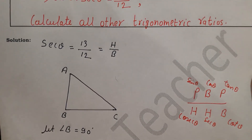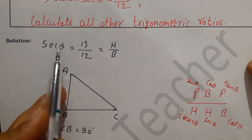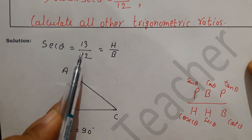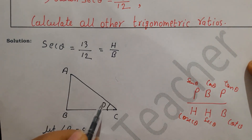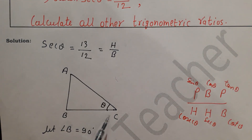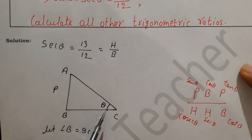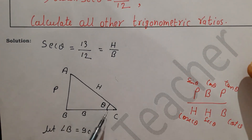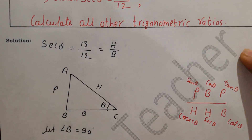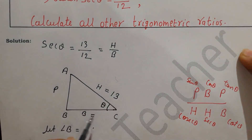Now see here: the triangle is complete with hypotenuse 13. For angle C, we have theta given. Whatever the acute angle — whether A, B, or C — we take the acute angle. The side just opposite to the acute angle is perpendicular, and the side between the hypotenuse and the acute angle, which it touches, is the base. So hypotenuse is 13 and base is 12.